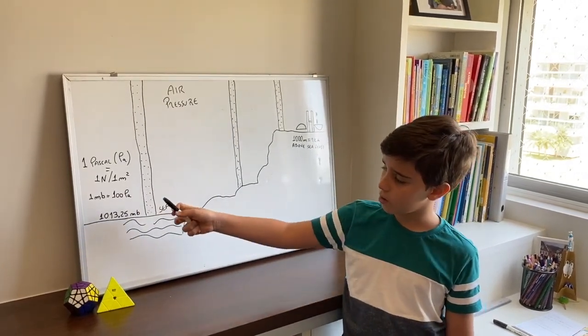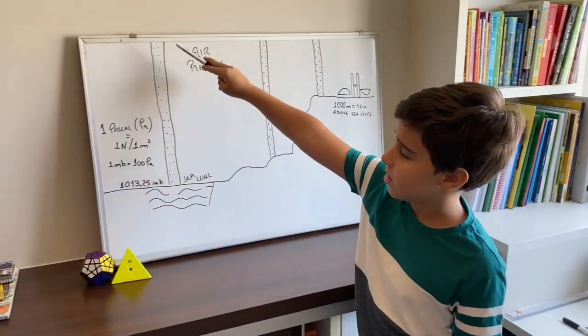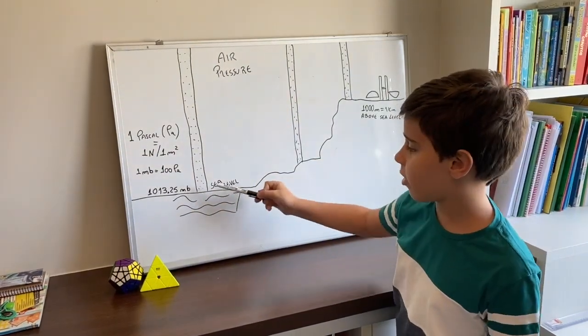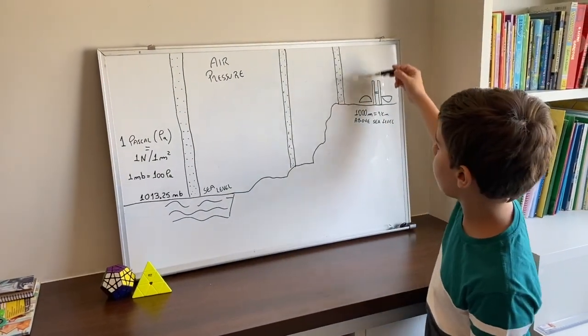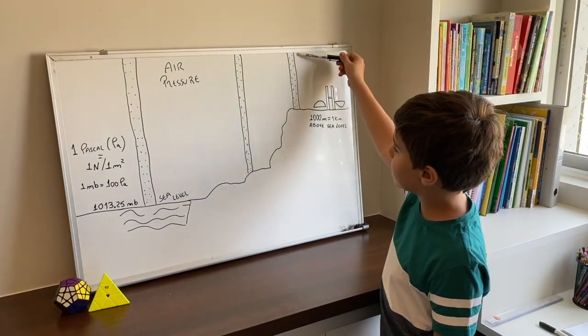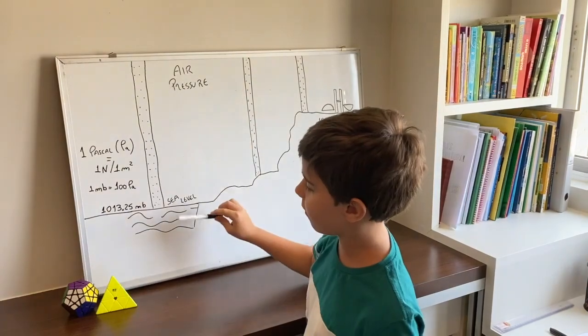As you can see, the columns of air are bigger at sea level and are smaller at high altitudes because here has little air pushing down and here has a lot of air pushing down.